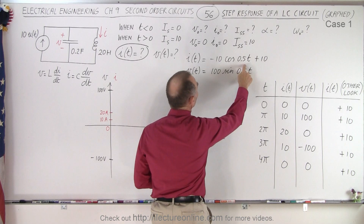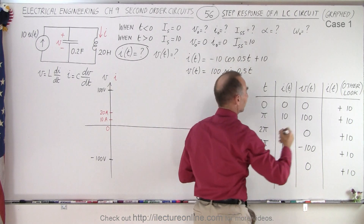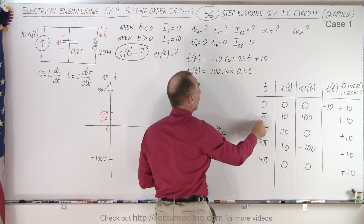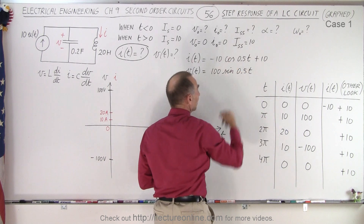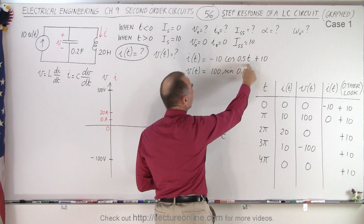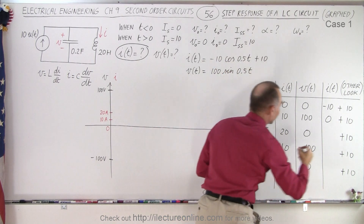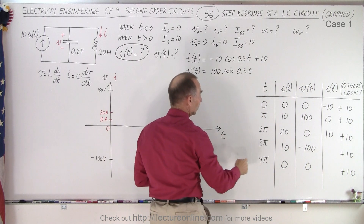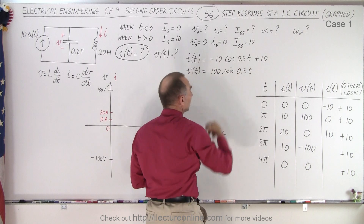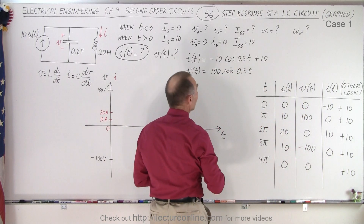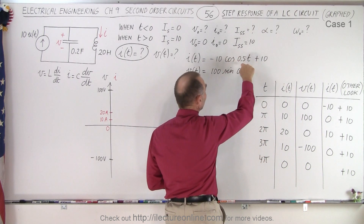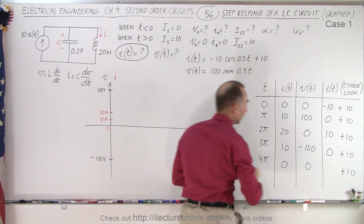When t equals 0, cosine of 0 is 1, so the oscillating portion is −10. When t equals π, 0.5π is 90 degrees, so that term is 0. At 2π, cosine of π is −1, times −10 gives +10. At 3π, that's 270 degrees, cosine is 0, so the oscillating term is 0. And at 4π, cosine of 2π is 1, times −10 gives −10 again.